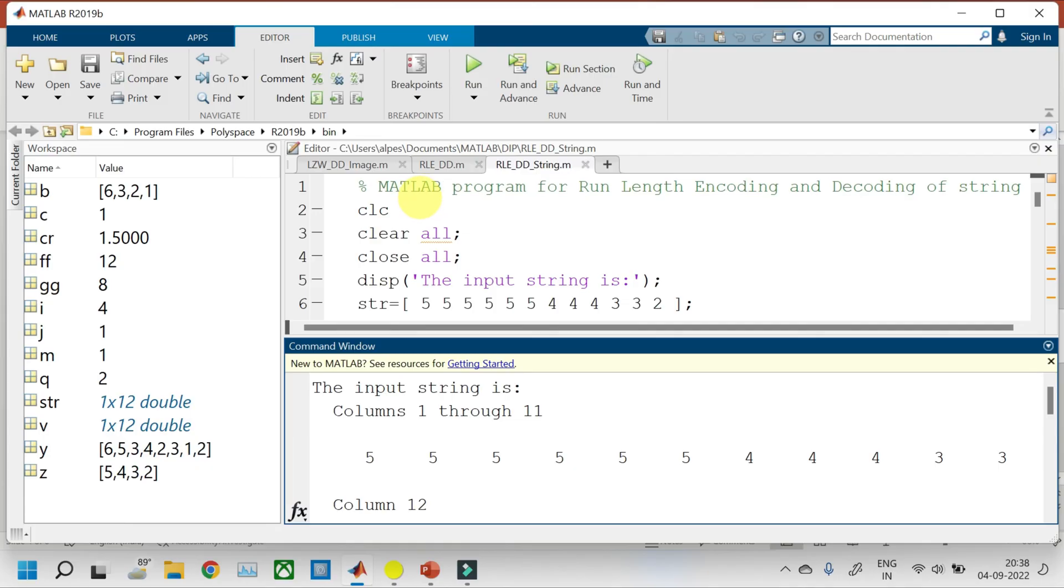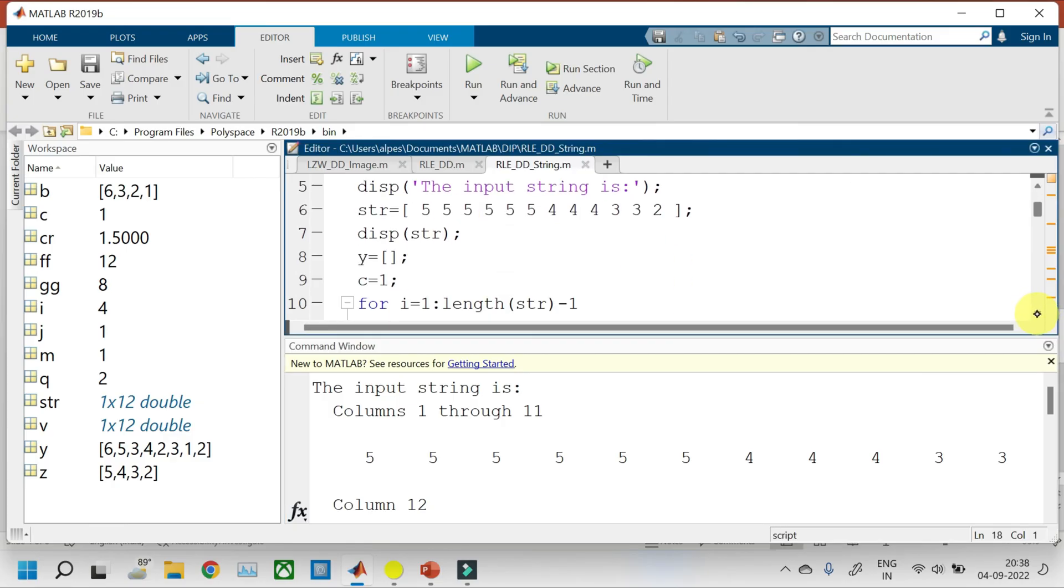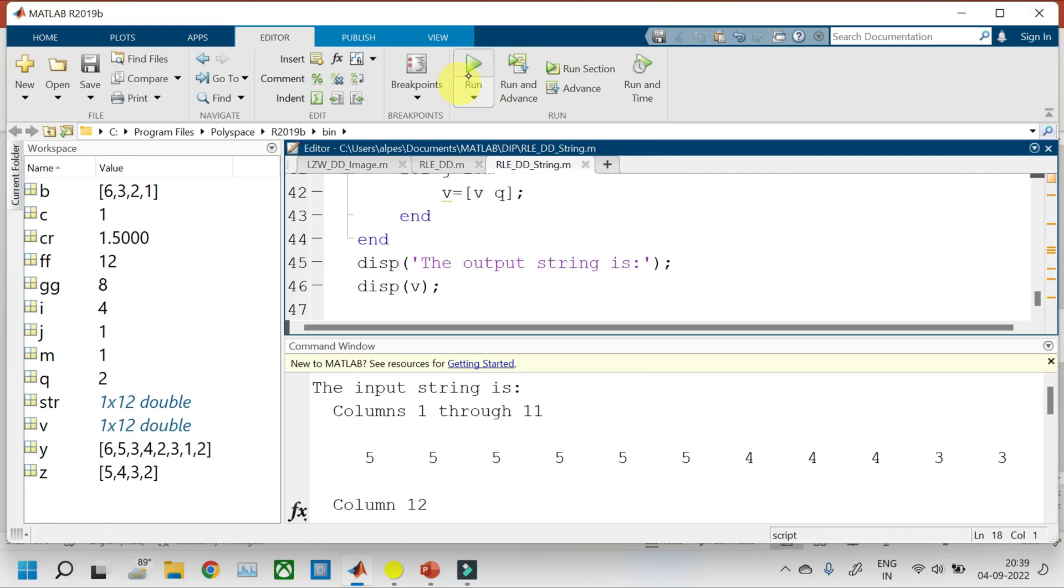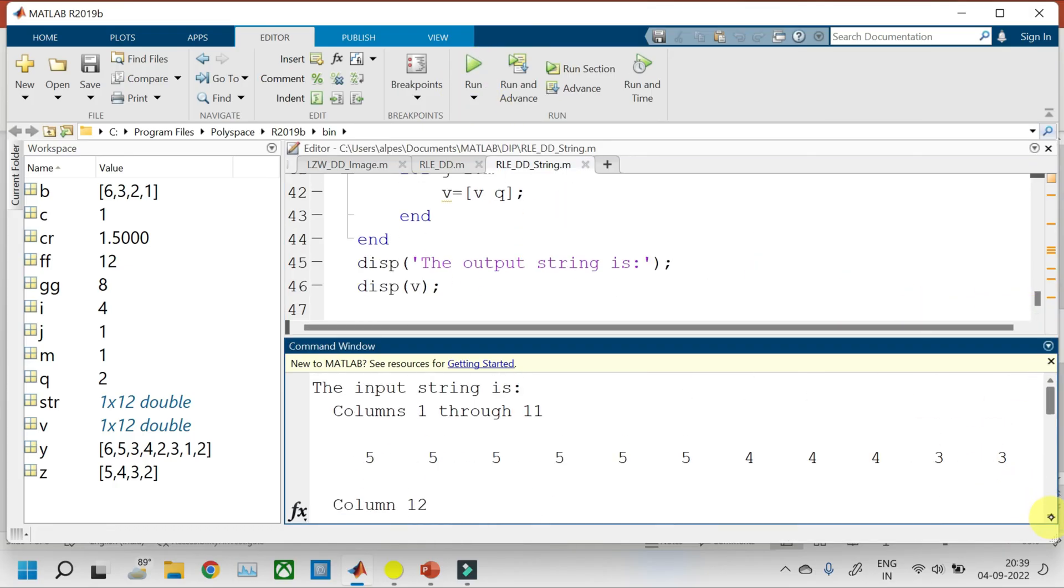Let us implement the first example in MATLAB. So this program shows run length encoding and decoding of a string. We have chosen the same string. Let us run and see the output. This is our original input string and this is the encoded string. 5 is occurring 6 times, 4 is occurring 3 times, 3 is occurring 2 times and 2 is occurring 1 time. And we can see that we are achieving the same compression ratio of 1.5 as we achieved in the theory. And the output string after decompression is again the same string.